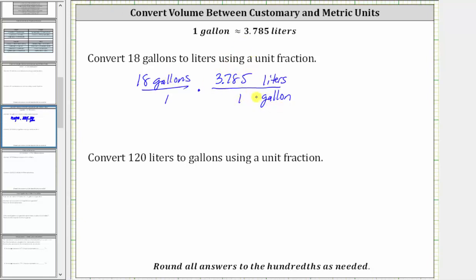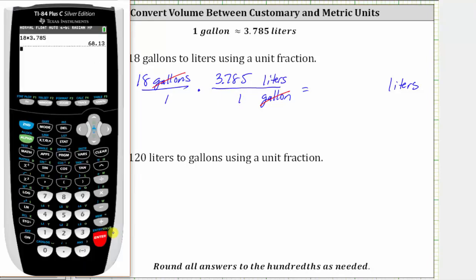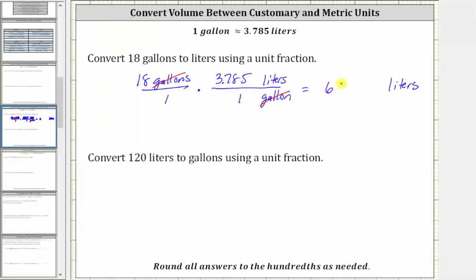In this form, we have gallons divided by gallons, and therefore gallons simplify out, leaving us with liters. Now we multiply, knowing the units are liters. Notice how we have a denominator of one, and therefore the product is just 18 times 3.785, which gives us a product of 68.13. So 18 gallons is approximately 68.13 liters.